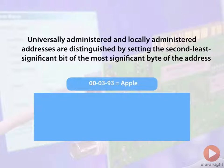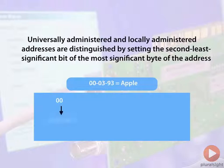So how does that work? We take the most significant byte, which is the furthest to the left, and break it down. We take the second least significant bit of that byte. Since it's a byte in hexadecimal, that hex value should represent 8 bits. The first 4 bits are represented by the first 0 in the hex address, and the last 4 bits are represented by the second 0.